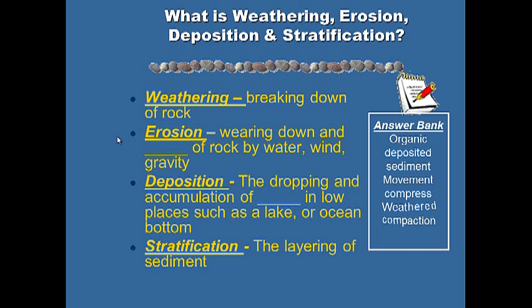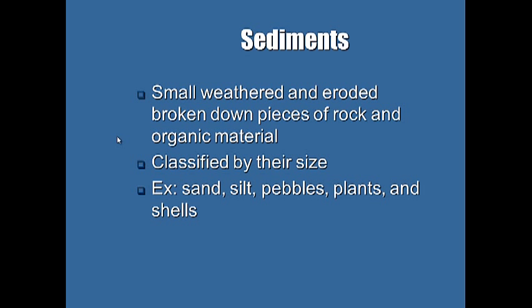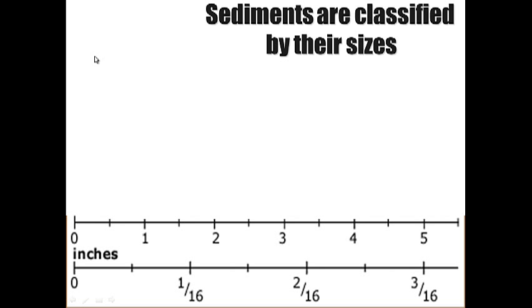Sediments are small, weathered, and eroded — broken-down pieces of rock and organic material. Sediments can also be organic, meaning things of life: pieces of leaves, plants, twigs, branches, seashells. If you go to a white sand beach in tropical places, the sand is mixed in with broken-down seashells. Plants and shells are all examples of types of sediment.